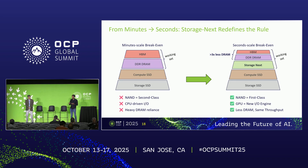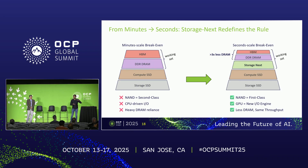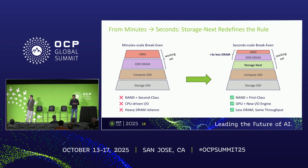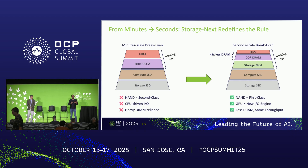What does this mean? We need to bring a new hierarchy into the system — coming back to a traditional hierarchy but introducing a new class of memory. We call that Storage Next: enabling NAND as a first-class memory extension. We need a new I/O engine that is GPU-initiated and GPU-native. We should think about enabling lower cost and increasing throughput, and all of that can be achieved with Storage Next.